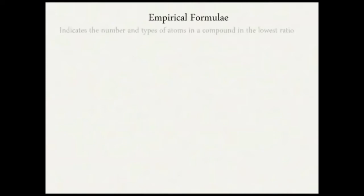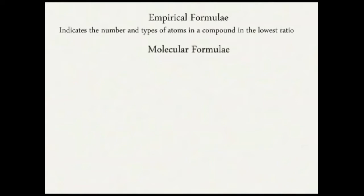An empirical formula is the formula that indicates the number and types of atoms in a compound in the lowest ratio. A molecular formula, on the other hand, is the formula that indicates the actual number and types of atoms in a molecule. The empirical formula can always be determined from the molecular formula, but the reverse is not possible.